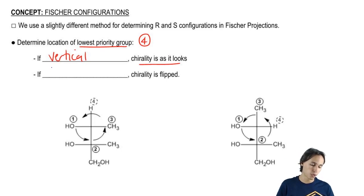Whereas if four is horizontal, then the chirality is just going to be flipped. So whatever you draw, you're just going to take the opposite sign.